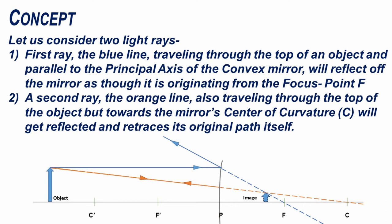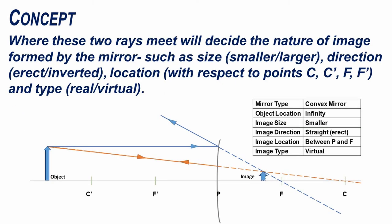Let us consider two light rays. The first ray, the blue line, travels through the top of an object and parallel to the principal axis of the convex mirror, and will reflect off the mirror as though it is originating from the focus, point F. The second ray, the orange line, also travels through the top of the object but towards the mirror's centre of curvature C, and will get reflected and retrace its original path. Where these two rays meet will decide the nature of the image formed by the mirror — such as size (smaller or larger), direction (erect or inverted), location with respect to points C, C', F, F', and type (real or virtual).